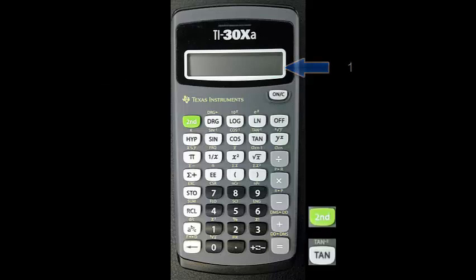Pressing second and tan at this point computes the inverse tangent of 1, and the calculator should display 45 again.